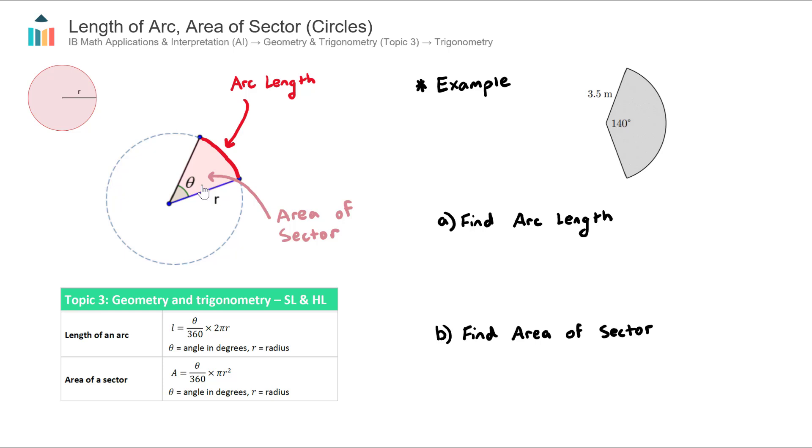We are looking to find the arc length which is the outer length of this sector shown here in red, and we also want to find the area of the sector - the area of this slice of pizza.